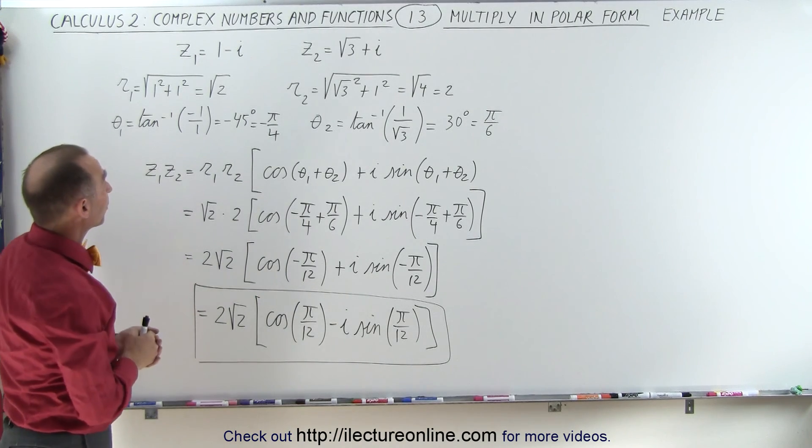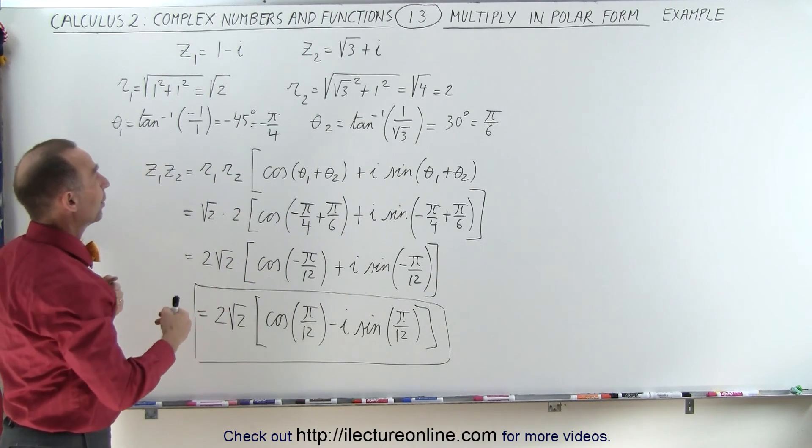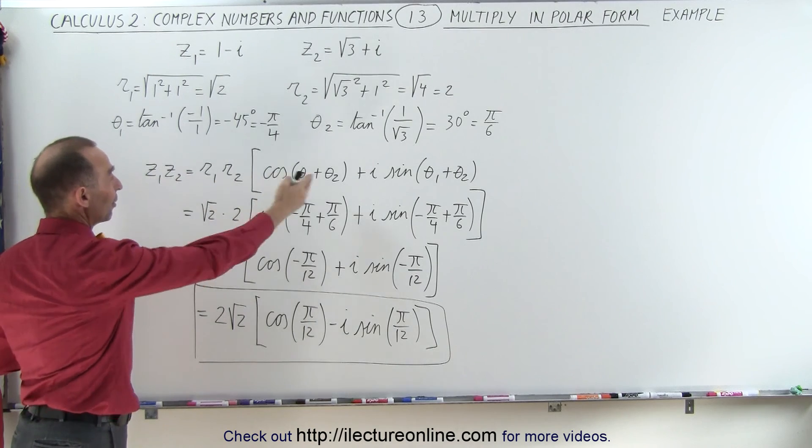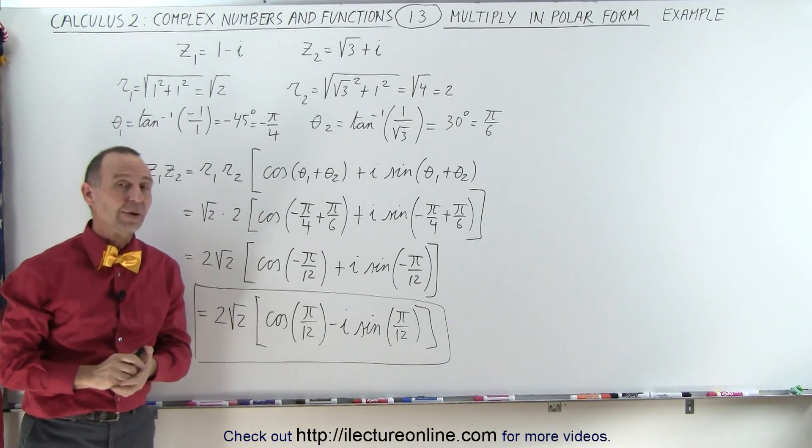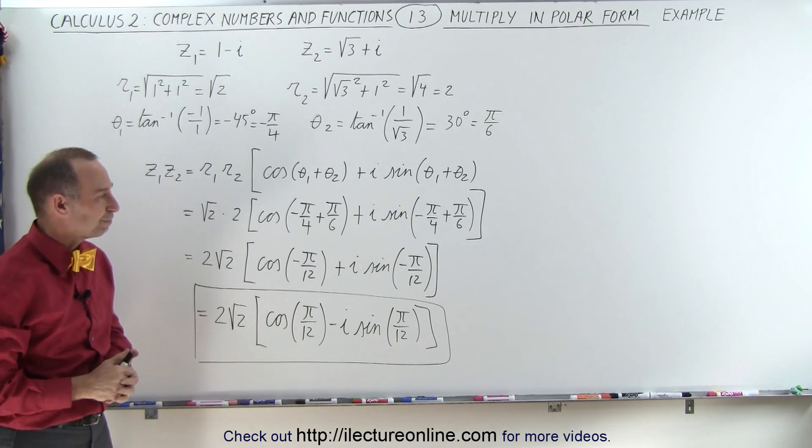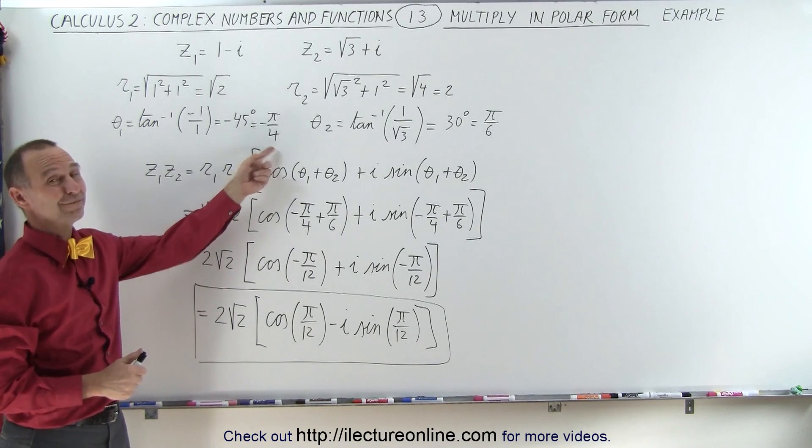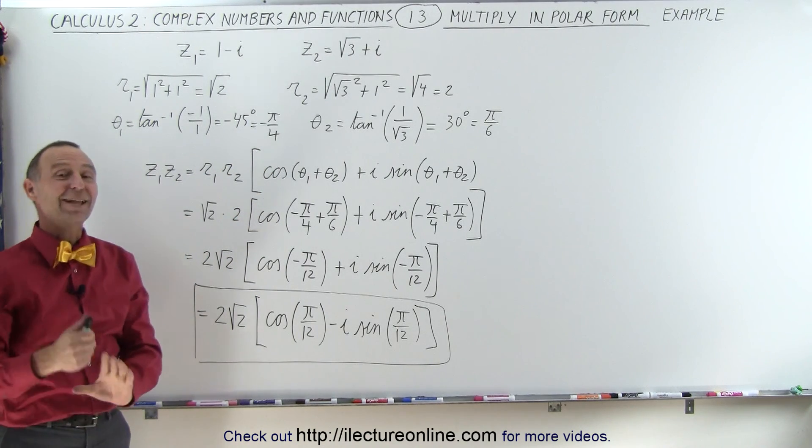So notice the hardest part was probably converting it to polar form. Once it was in polar form, it's very easy to figure out the product of two complex numbers. Of course, we don't make a mistake at that point. And that's how it's done.